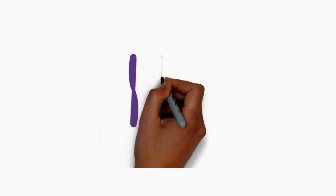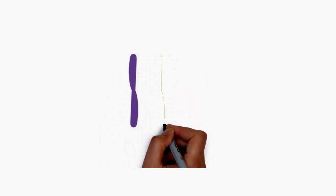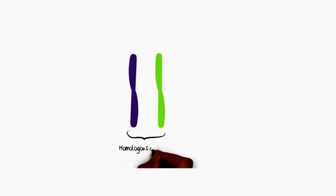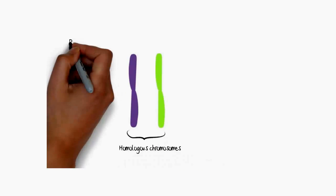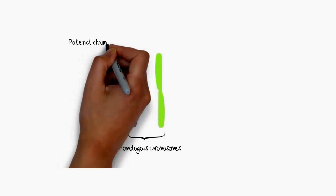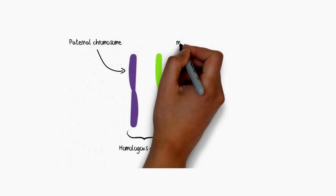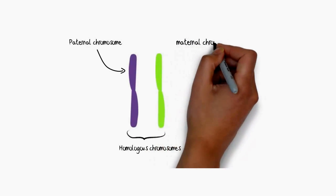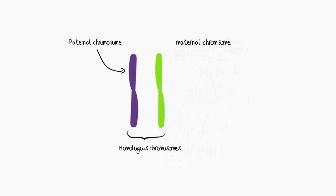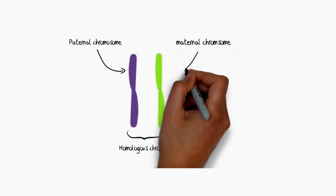What we're looking at now is chromosomes. They don't have that characteristic X shape that you might remember, but these are homologous chromosomes. What that means is that the same chromosomes have the same genes in the same location. We get homologous chromosomes one from each parent — a paternal chromosome from the father and a maternal chromosome from the mother.